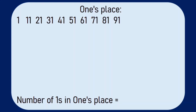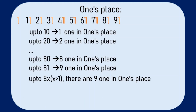I have listed the digits with ones in the ones place. Up to 10, there is only one 1 in the ones place, because the only digit with 1 is 1. Up to 20, the digits with 1 are 1, 10, and 11, but out of these three digits there is only one 1 in the ones place — hence the number of ones up to 20 is 2 in the ones place.